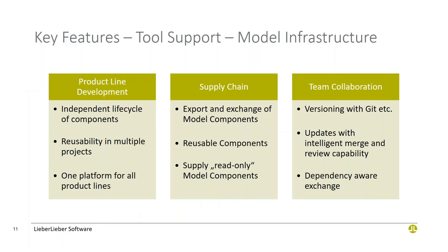These capabilities we build to do product line development with Enterprise Architect can also be used for other scenarios. You can send a part of a model to a supplier, they can add their content and send it back for reintegration — covering the supply chain. You can also use the same capabilities for advanced team collaboration, or for managing product variants using branches and our Lemon Tree component strategy instead of the 150% model approach.